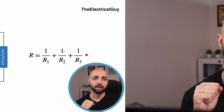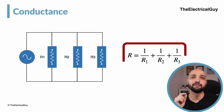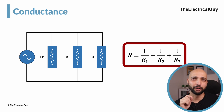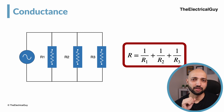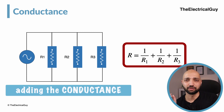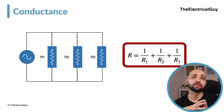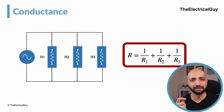Conductance is useful in the analysis of circuits where resistors are connected in parallel. To find the total resistance in a parallel circuit, we use a formula that is essentially adding the conductances. Hence conductance is also said to be the reciprocal of resistance.